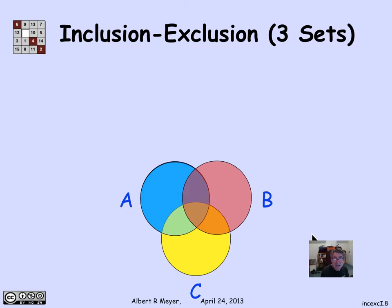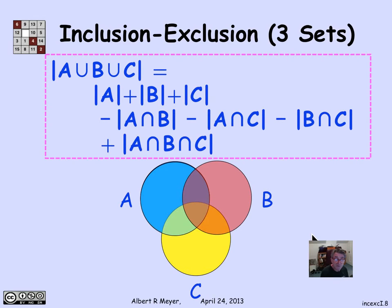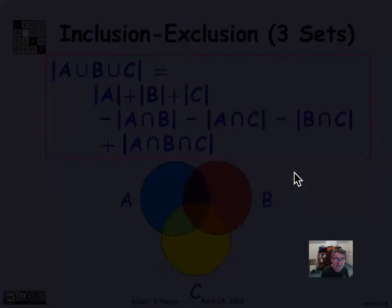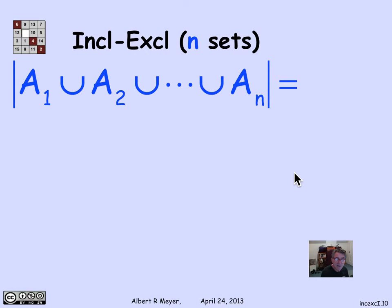Now, inclusion-exclusion for three sets. We've said before, it's this slightly more complicated thing where you've got a sum of the intersections of one set minus the sizes of the intersections of two sets plus the size of the intersection of three sets. And that generalizes to the following somewhat messy formula.